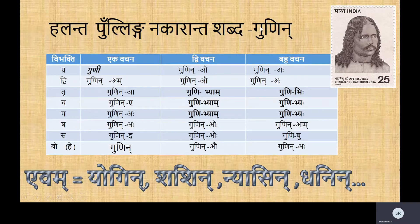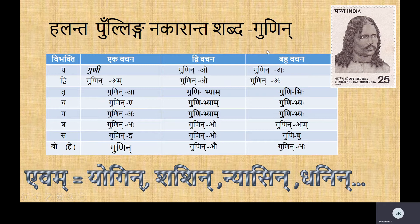This is a very useful model because many words which end with 'in' will follow the gunin shabda. Many tadhitas and krita pratyayas are present which make words end with 'in', so they follow the gunin shabda. This is slightly different from the rajan shabda, but the gunin is actually easier than the rajan. So we will see how the gunin goes.